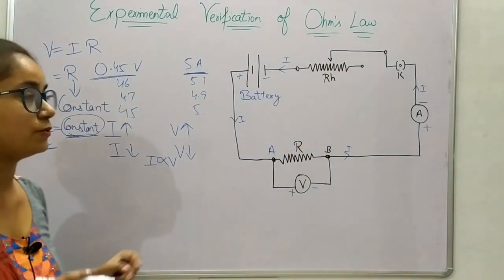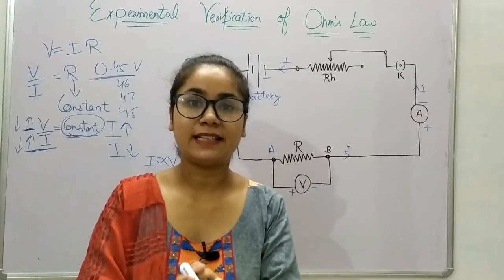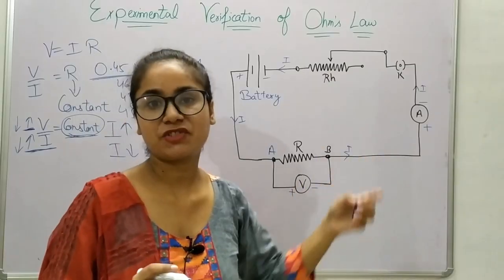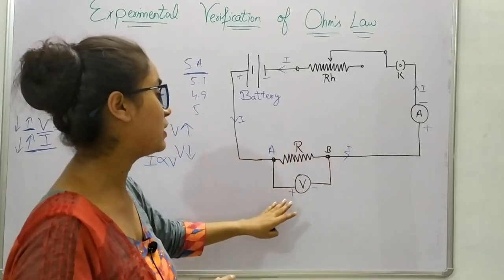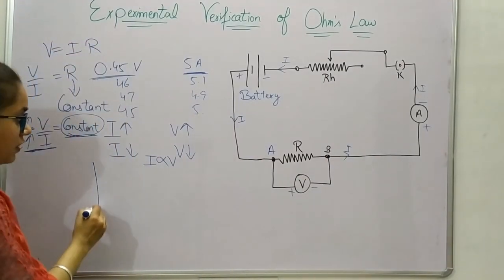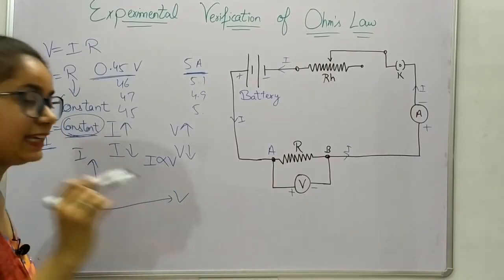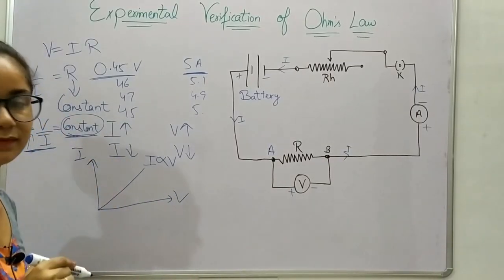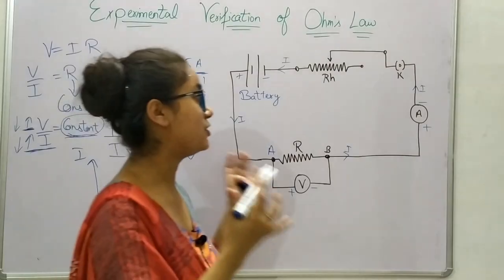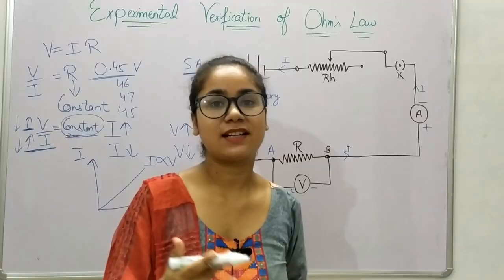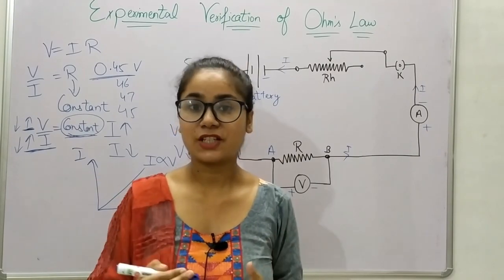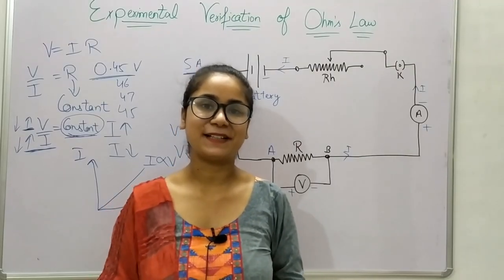This was all about the verification of Ohm's law. If you have arranged the equipment, you will take various readings by changing the resistance with the rheostat — you can take 5, 6, 7 or even 10 readings of the voltmeter and ammeter. When you draw a graph of I versus V, you will get a straight line. If you can do this at home, please share it with me through Instagram or Facebook. Subscribe to my channel and hit the bell icon. Thank you so much.